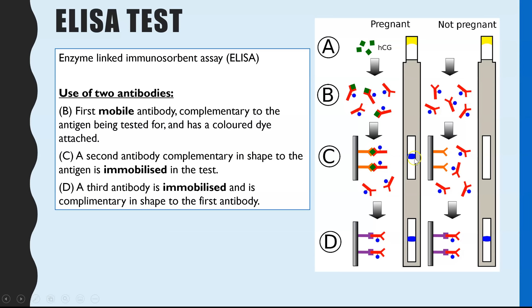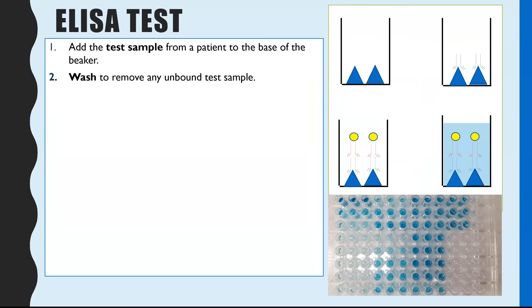This same idea applies for testing for other proteins in the body — it's not just for the pregnancy hormone. You could design your antibodies to test for a particular protein produced by individuals who have prostate cancer or other diseases that produce a particular protein. You might also see the following version of the ELISA test come up in A-level exam questions.